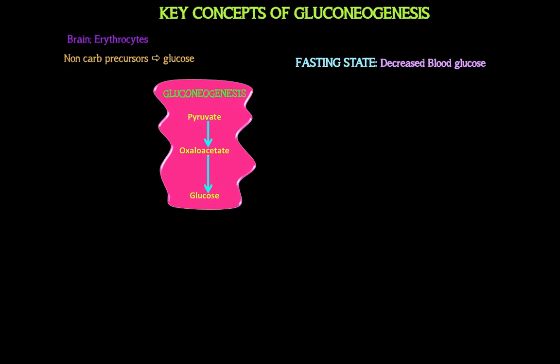The first precursor is lactate. You get lactate from erythrocytes and from exercising muscle. Under vigorous exercise, there is not enough oxygen reaching the muscle, so the muscle converts pyruvate to lactate. Lactate is therefore a glucogenic precursor.